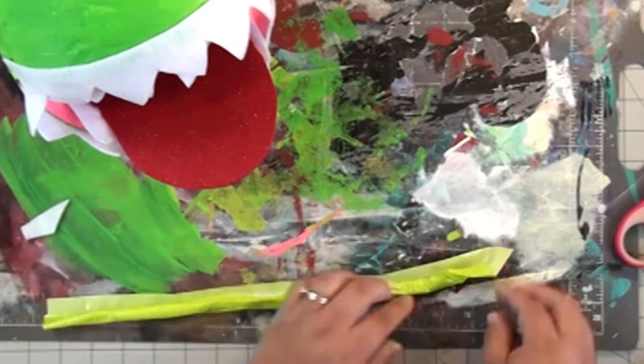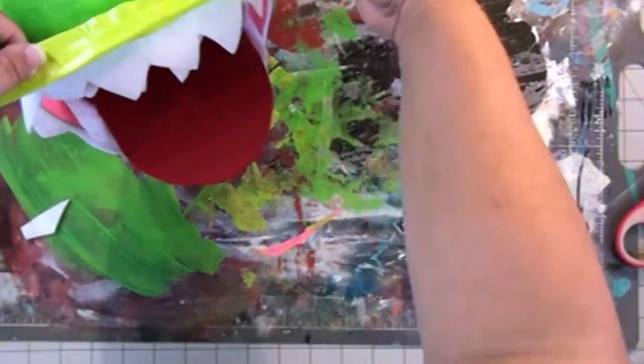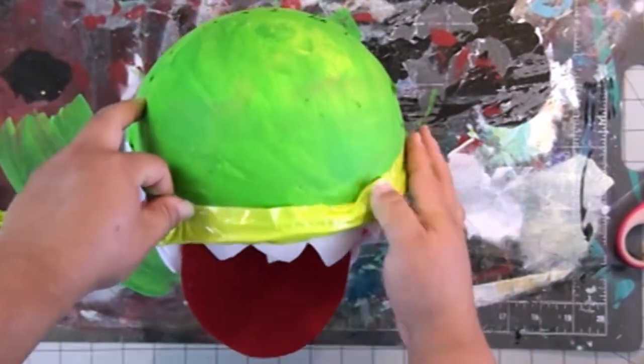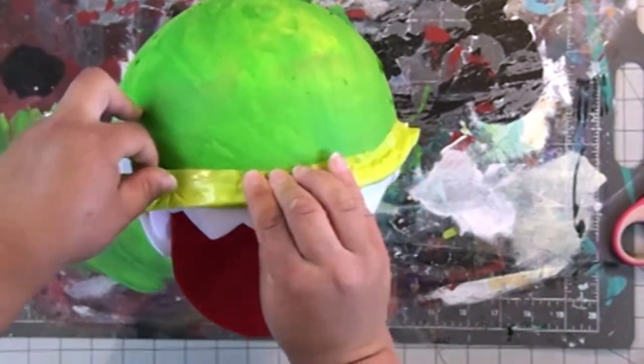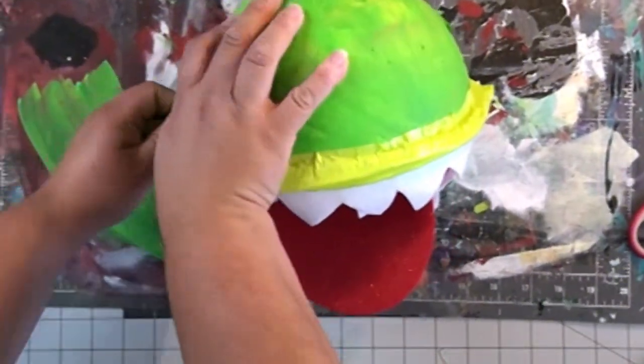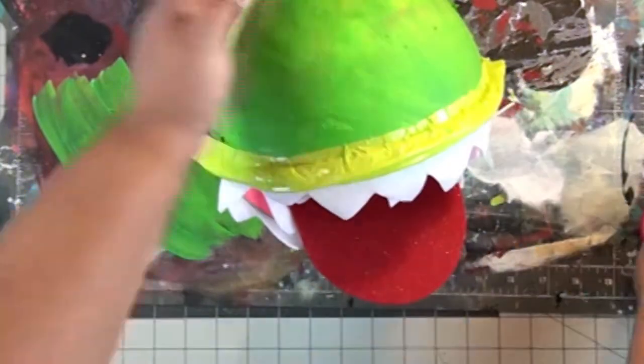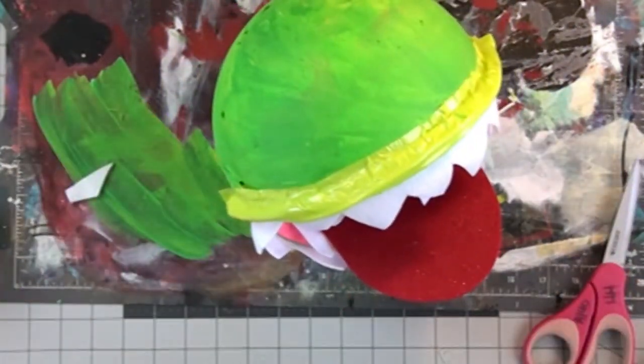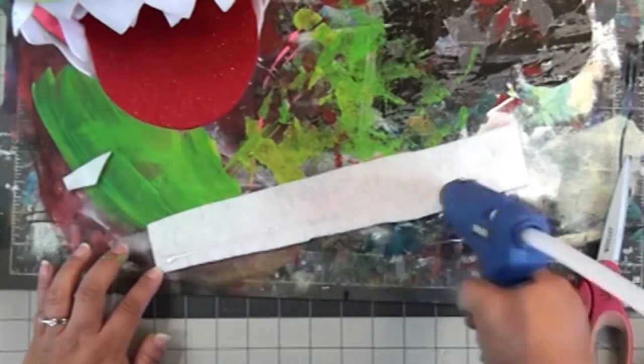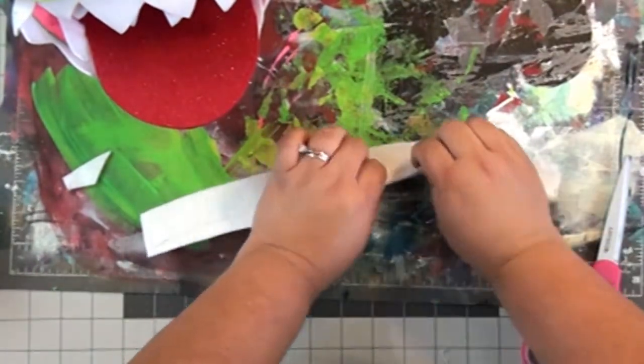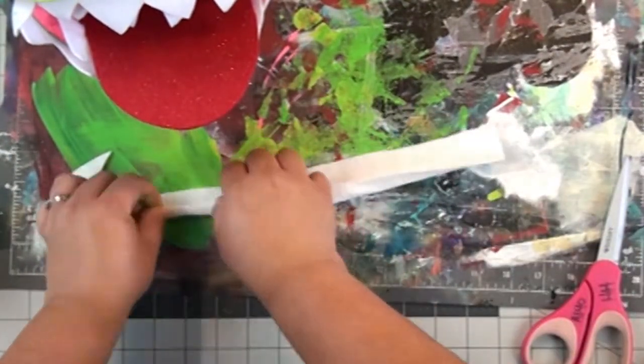And I'm not rolling it all the way. I want to have a little bit of that adhesive still out and still exposed so that I can stick this lip to the mouth. So you can see here I've pressed it down and that's going to cover that seam of the felt and also give it a little bit more dimension and fun.